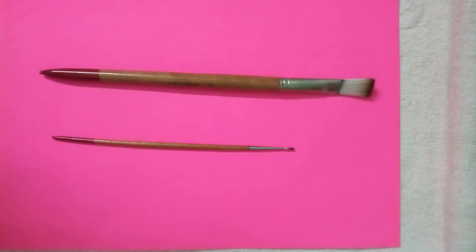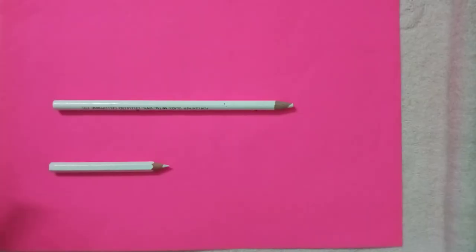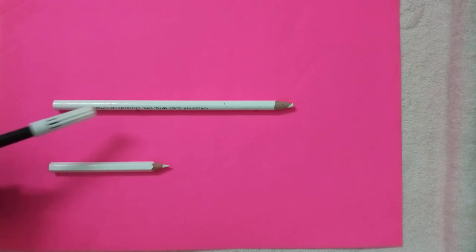Now I am showing you some different things. Here you can see two brushes are kept. This one is a tall brush, this one is a short brush. Here you can see two pencils are kept. This one is a tall pencil, this one is a short pencil.